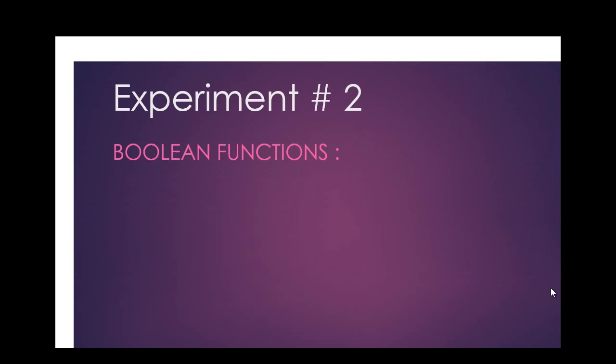In experiment number two we are discussing boolean functions. The first boolean function is f1 which has a domain of three variables a, b, and c, which is equal to a AND b-complement plus a-complement AND c.